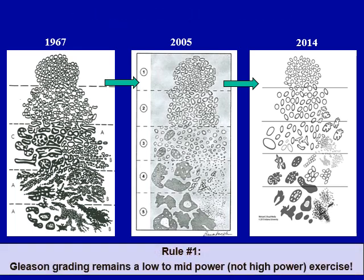Rule number one: do not use high power magnification to grade prostate cancer. Gleason grading is best done at low to intermediate magnification. If you jump to high power to grade a prostate cancer, you are likely going to overgrade it.